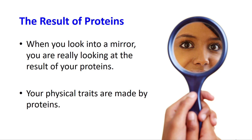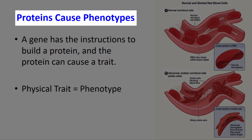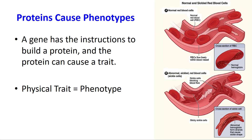Those genes will code for proteins, and the proteins are what makes you look the way you do. Your physical traits are made by your proteins — when you look in the mirror, you're really looking at all the results of your proteins. These proteins are what cause something called your phenotype: it's what you look like, it's how your body works. A gene has instructions to build the protein, and that protein is what causes the trait. Proteins cause your phenotypes.